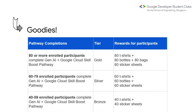Now, coming to the goodies. Other than gaining extensive knowledge and experience on the Google Cloud Platform, each college will be divided into tiers. The Gold tier will be awarded to campuses where 80 or more students complete both pathways. We have 163 registrations from our campus, so if 80 plus students complete all labs before October 2nd, we'll be eligible for t-shirts, bottles, bags, and sticker sheets.